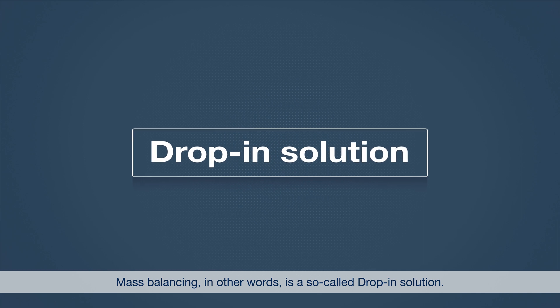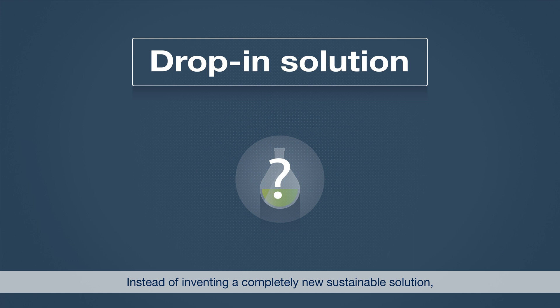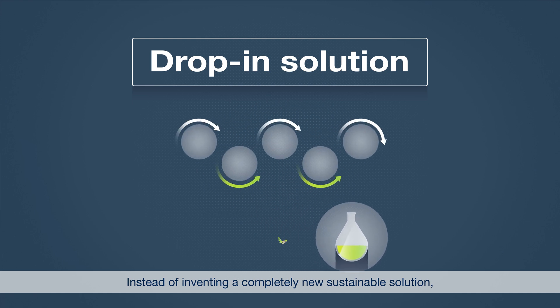Mass balancing, in other words, is a so-called drop-in solution. Instead of inventing a completely new, sustainable solution, we incorporate the renewable raw materials into the existing production network.